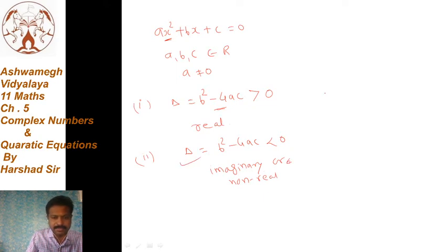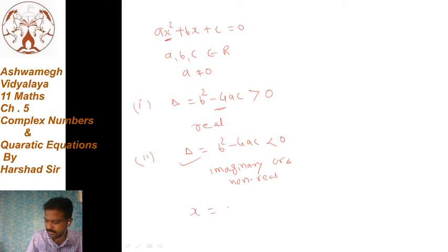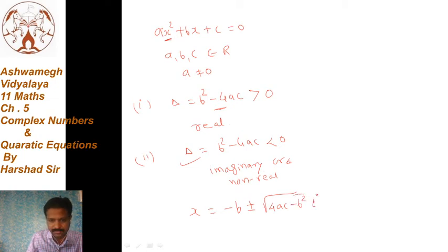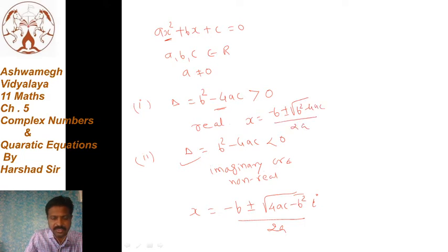हम आज इस topic पर बात करने वाले हैं — non-real root कैसा होगा? तो x is equal to minus b ± √(4ac - b²) · i divided by 2a. वैसे तो root यह होता है: x = (-b ± √(b² - 4ac)) / 2a, लेकिन जब non-real की बात होती है, तो minus के बदले हम imaginary complex number लेते हैं — minus 1 के बदले i²।